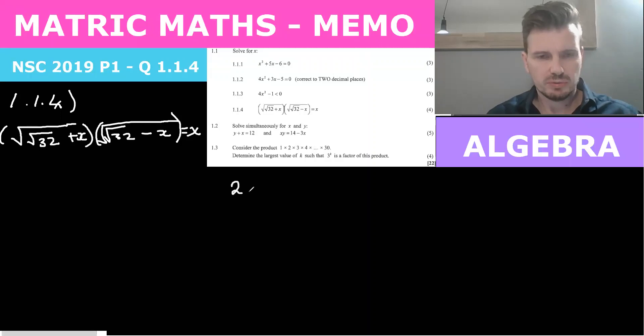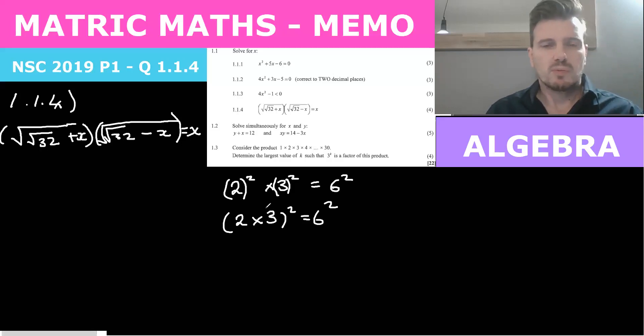Remember that if we have say 2 squared times 3 squared, if you had these in brackets, you could say that equals 6 squared. So for example, I could also have 2 times 3 squared. We can see that that's 6 squared. So when something is in brackets, we can square the whole lot. So we can imagine that these times in between, we could square everything and it wouldn't change the answer. So that's what we're going to do here. We're going to square everything.